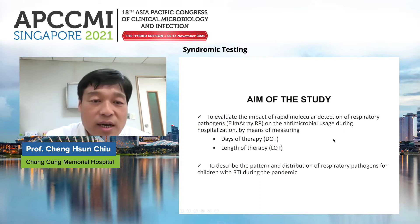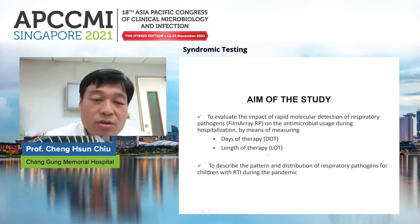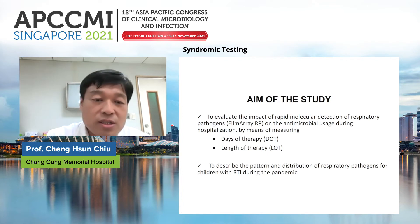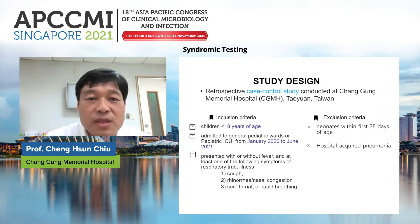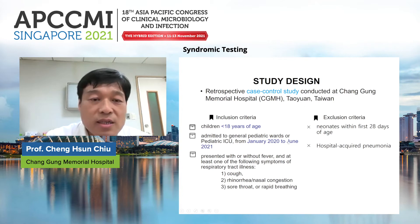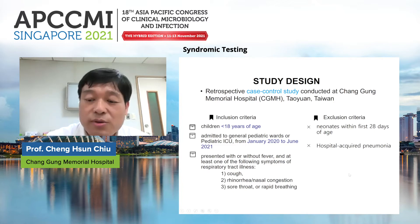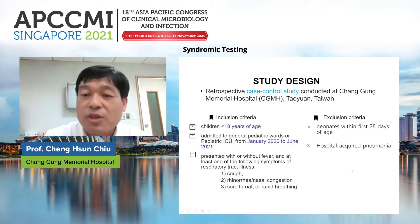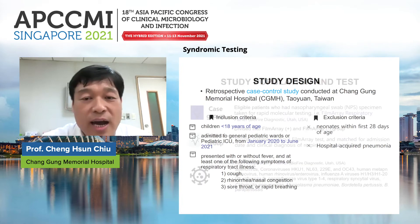We measured antibiotic days of therapy and length of therapy for children with pneumonia, and described the pattern and distribution of pathogens for these children with RTI during the pandemic. This is a case-control study. The exclusion criteria excluded neonatal patients and patients with hospital-acquired pneumonia; we only targeted community-acquired pneumonia. The case group received the FilmArray panel, and the age-matched control group had RTI without FilmArray testing.